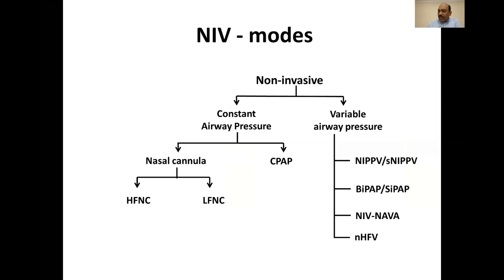Coming back to non-invasive ventilation, the various modes of NIV are classified into constant airway pressure modes or variable airway pressure modes. Among the constant airway pressure modes, you have CPAP, which can be delivered through various ways. You can also have nasal cannula, including high flow and low flow nasal cannula. The important thing with nasal cannula devices is that although the airway pressure is constant, it is neither measured nor monitored.